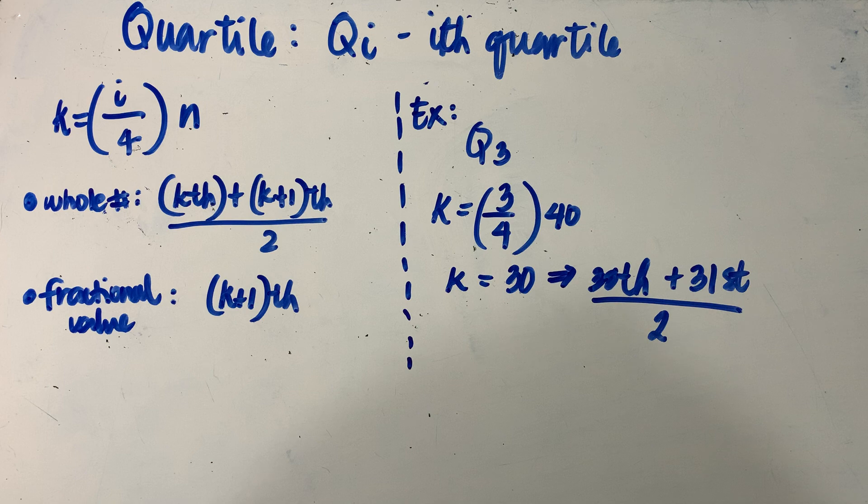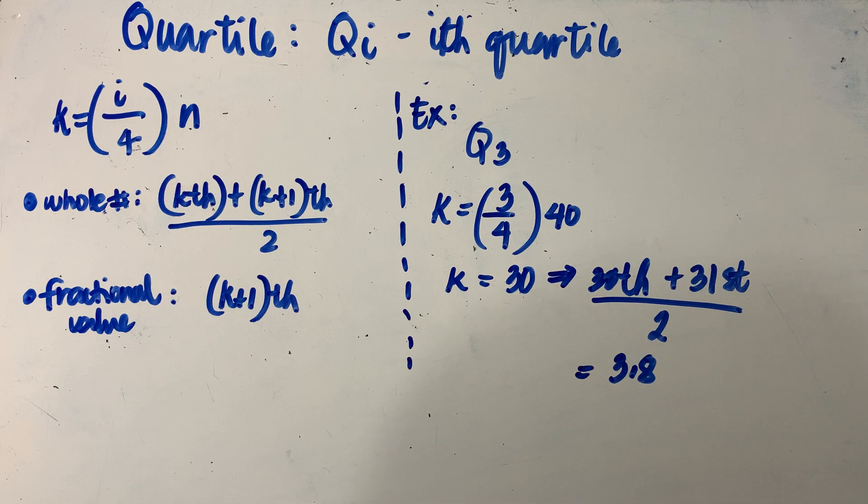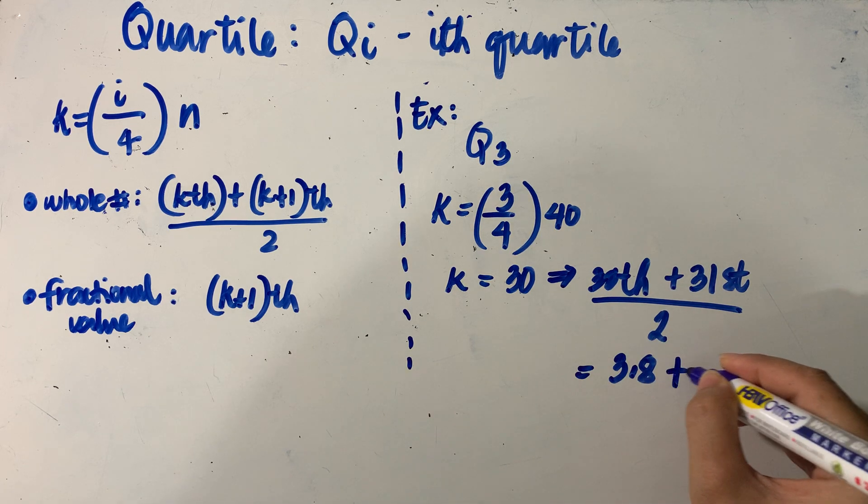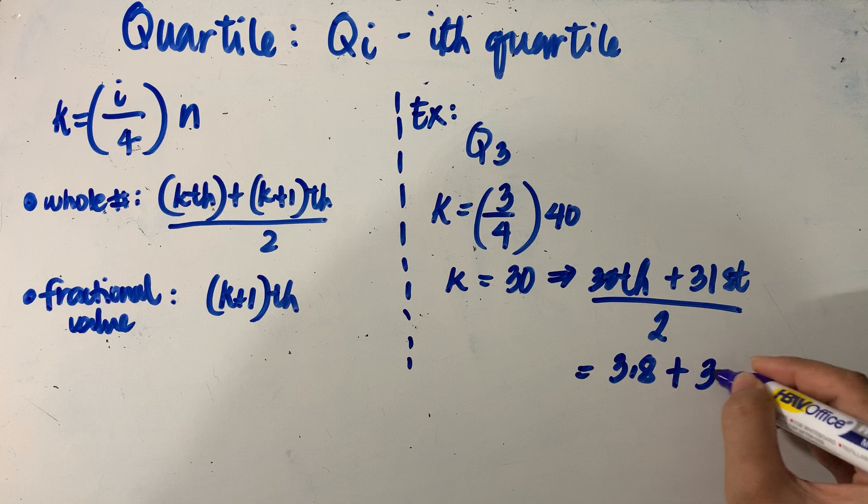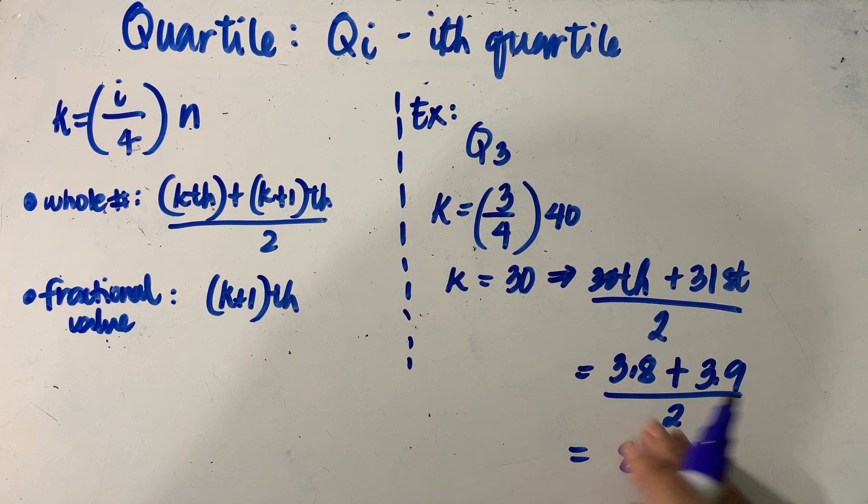Going back to our table involving the data values of the 40 car batteries, the 30th data value would be equal to 3.8. The 31st data value is 3.9. And then we divide it by two. So what we will have is that this will be equal to 3.85.